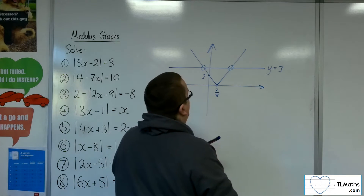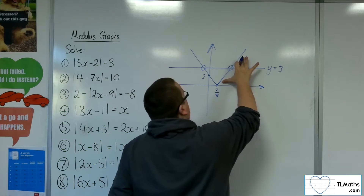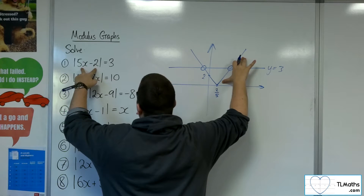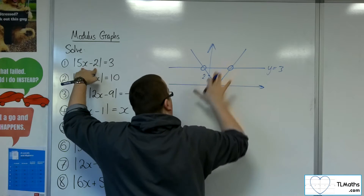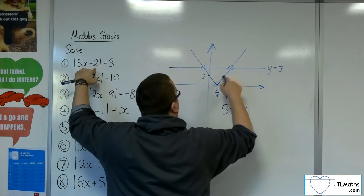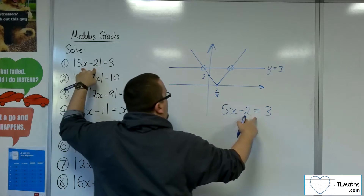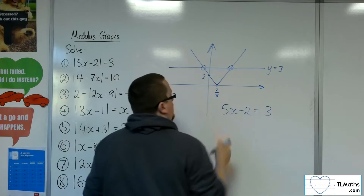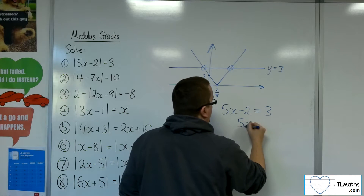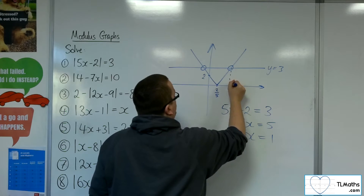How do we find those two points? This line here is representative of y equals 5x minus 2, because that's the positive gradient. We'd have 5x minus 2 intersecting with y equals 3. So adding 2 to both sides gives 5x equals 5, and so x equals 1.